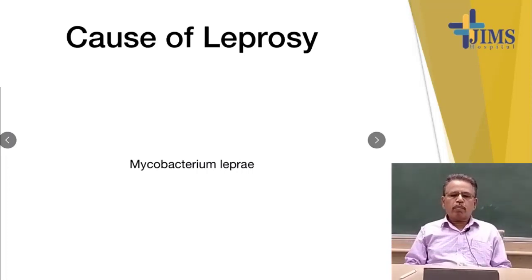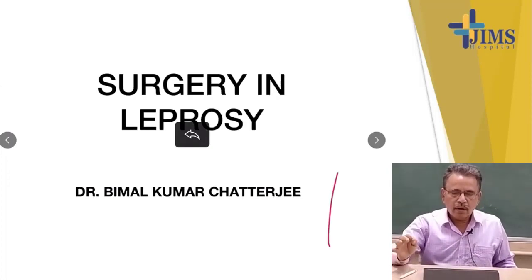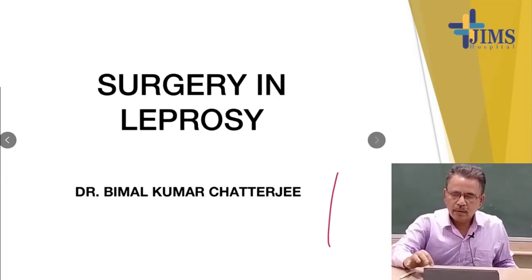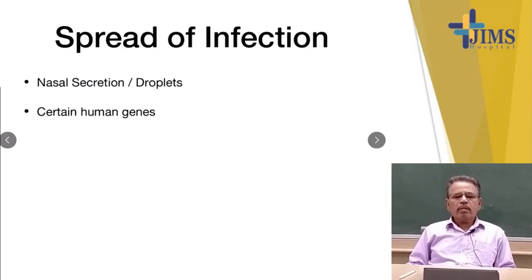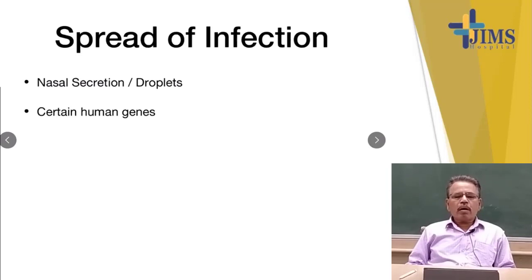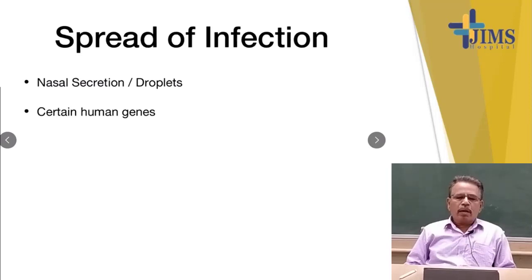The cause of leprosy is Mycobacterium leprae. How does it spread? It is a very infectious disease, but today due to various kinds of drugs, prevention is mandatory. It spreads by droplet infection. When any infected person coughs, sneezes, sings, or laughs, this droplet infection is spread and when a non-infected person comes in contact, then it spreads to that normal person.